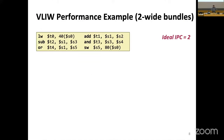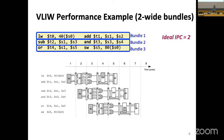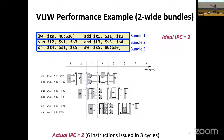Looking at a VLIW example in the ideal case, assuming two-wide bundles: the compiler figured out independent instructions and put them together as bundle one, bundle two, and bundle three. Hardware is simple — two-wide fetch engines, no dependence checking. All bundles can be executed in a pipelined manner. The ideal IPC is clearly two instructions per cycle if the compiler was able to fill all slots, both vertically every cycle and horizontally across pipeline stages.